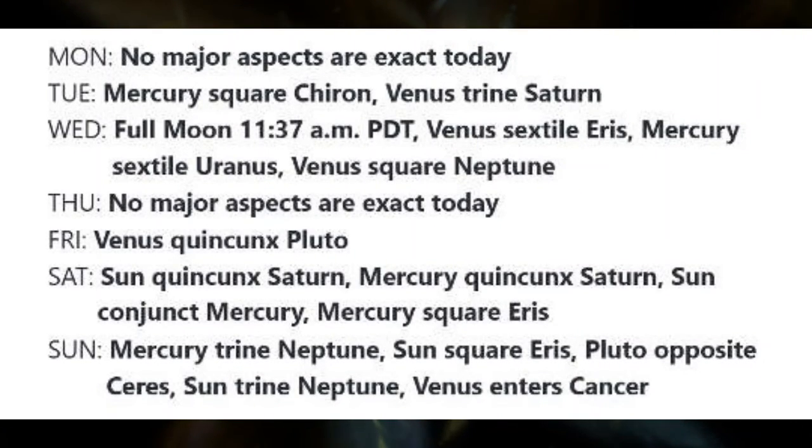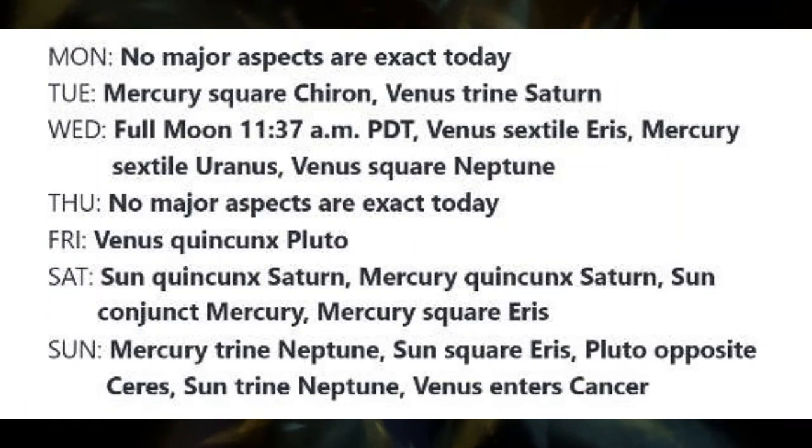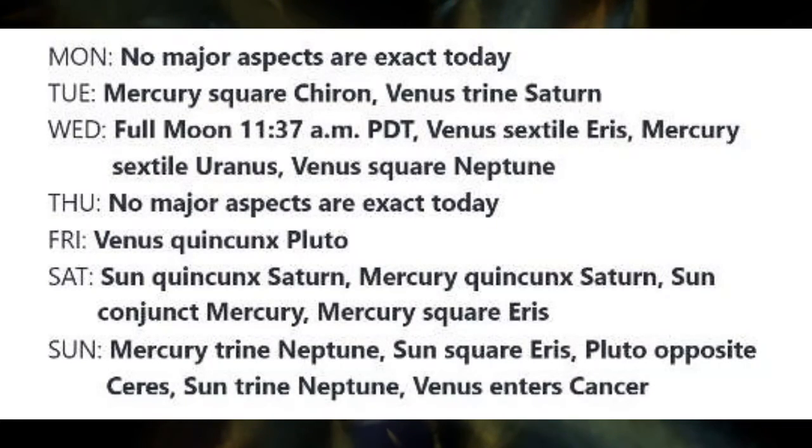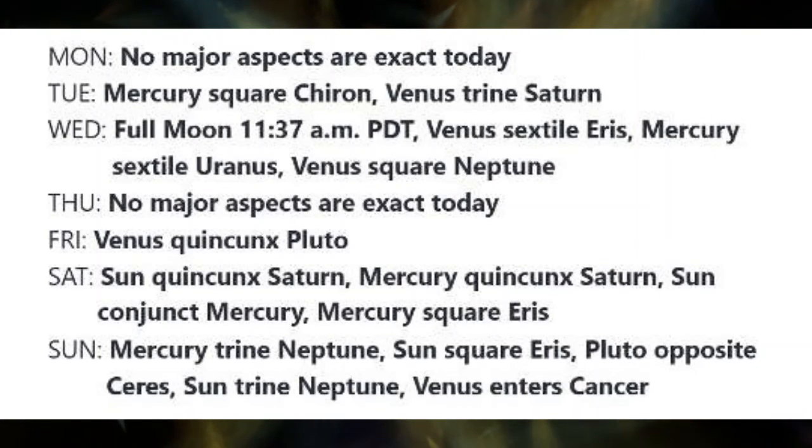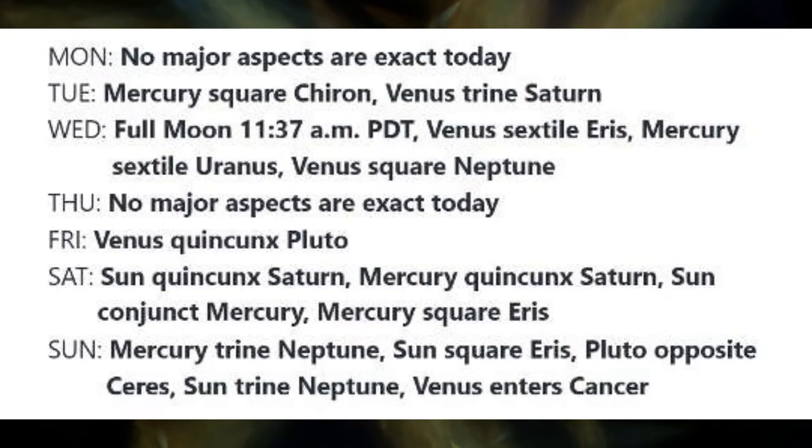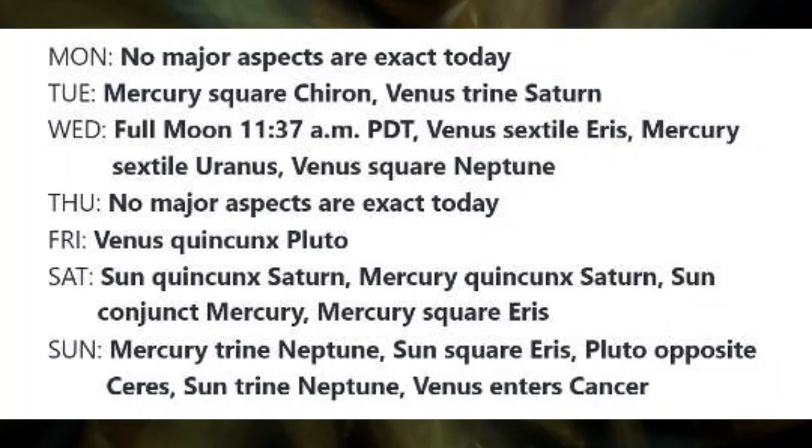The full moon occurs on Wednesday at 11:37 a.m. Pacific Daylight Time. This full moon is the closest supermoon of 2022, which magnifies its impact on our physical and emotional senses. Also on Wednesday, Venus is sextile Eris but square Neptune. While we may feel emboldened to assert our needs in a relationship, it is important to realize that we may not be reading a situation clearly. Also on Wednesday, Mercury is sextile Uranus. Opportunities for new insights and aha moments accompany this aspect. We could also be feeling very restless or nervous, or speak impulsively.